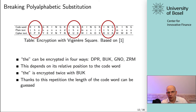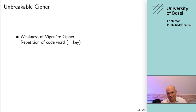Once you have the length of the code word, you can run frequency analysis just as before and try to exploit that. The weakness of the Vigenère cipher is therefore the repetition of the code word — that's essentially what we have exploited here.